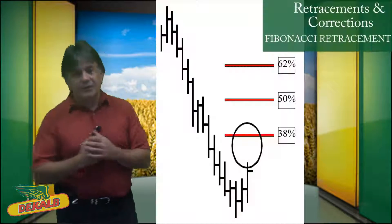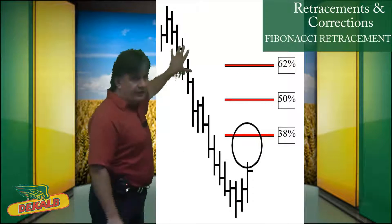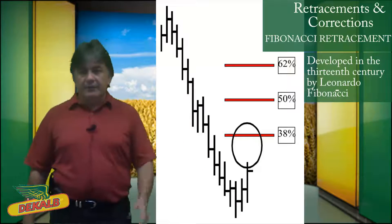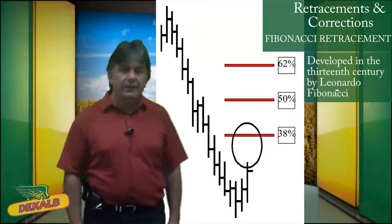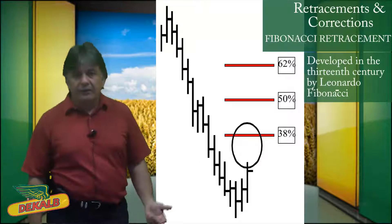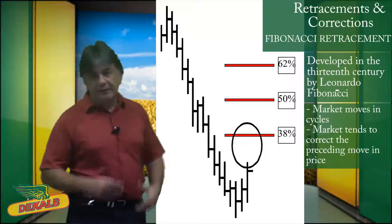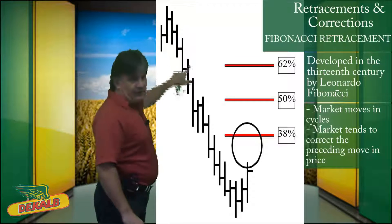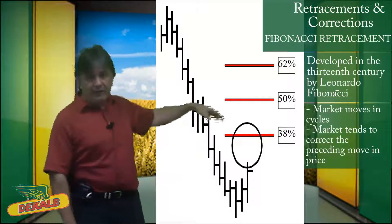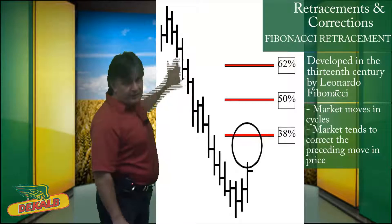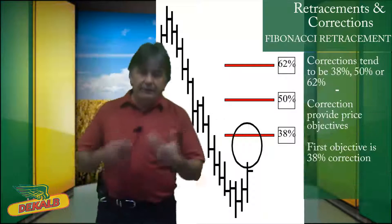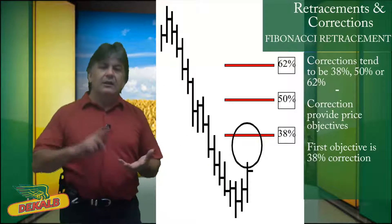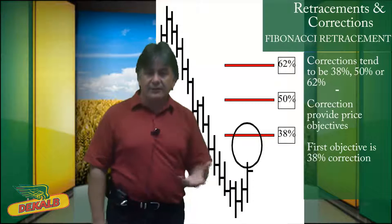Let's start off with retracements and corrections. There's a guy by the name of Leonardo Fibonacci who developed this pattern or technique in the 13th century. He believed that his study showed that markets move in cycles. When a market is moving down, eventually the market may find a bottom and it's going to retrace part of that move back up. He found in his study that corrections tend to be 38%, 50%, and 62%. Corrections provide price objectives.